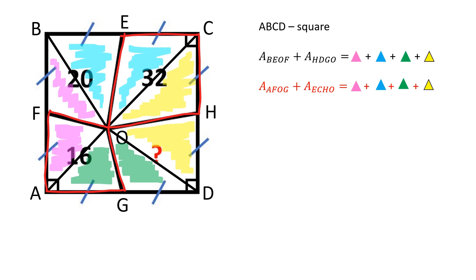We can equate these two expressions and find the area of the quadrilateral HDGO, which is equal to 28 square units.